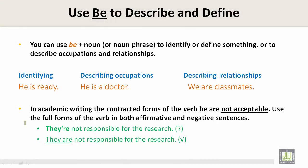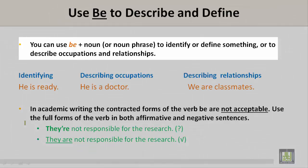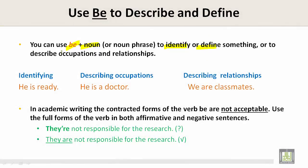Use be to describe and define. You can use the verb be plus a noun or a noun phrase to identify or define something, or to describe occupations and relationships. Let's look at the three key headings: identifying, describing occupations, and describing relationships.